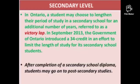In Ontario, a student may choose to extend their secondary school study, referred to as a 'victory lap.' In September 2013, the Ontario government introduced a 34-credit threshold to limit the length of study. Thirty credits are required for the Ontario Secondary School Diploma. After completing a secondary school diploma, students may go on to post-secondary studies.